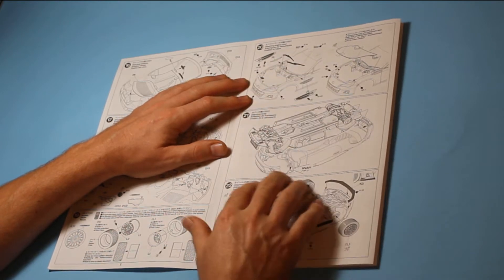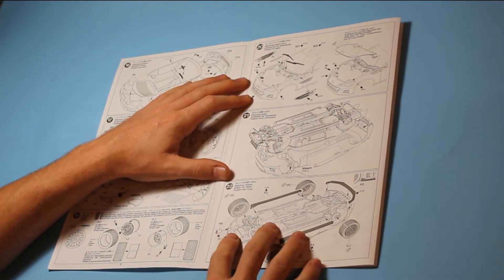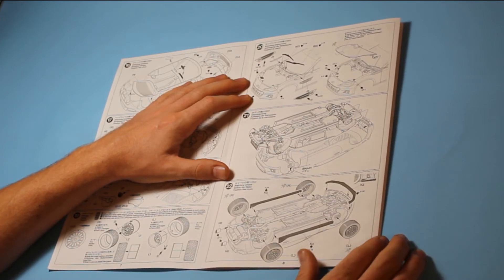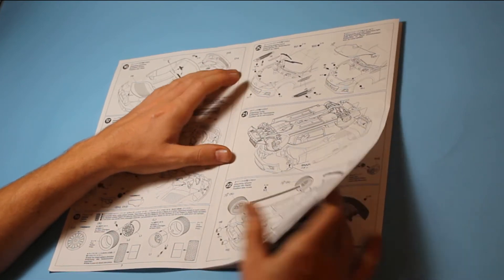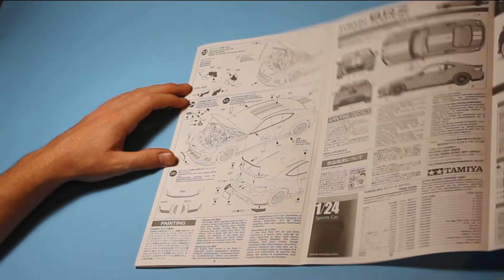Then the bonnet comes through with the window wipers and then the body attaches to the chassis. The wheels go on and parts of the body kit are applied there along with the exhausts.